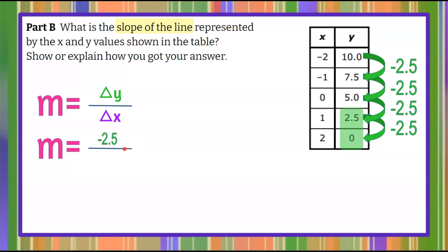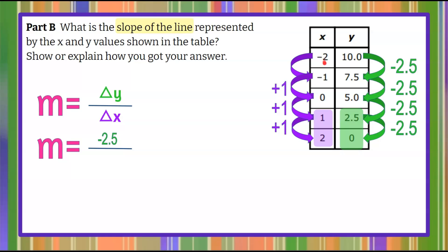Then we look at our x values and find the change between them. Going from 1 to 2 is increasing by 1; 0 to 1, increased by 1; negative 1 to 0, increased by 1; negative 2 plus 1 gives negative 1. So our constant rate of change in x values is positive 1. Now we do the division: negative 2.5 divided by 1 gives us a slope of negative 2.5.